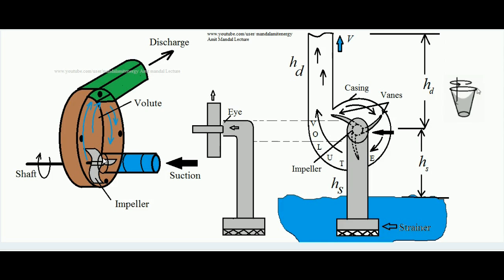Now how does water enter inside the casing? It is by the help of a suction pipe. This is the point of suction — you can see this is the pipe, this is the portion of suction pipe. Water travels through this suction pipe and ultimately reaches the impeller. This end of the suction pipe where water meets the rotating impeller is called the eye — "I". So the eye is the place from where water enters the casing of the centrifugal pump. This green colored entity is the portion of the delivery pipe, through which water ultimately travels and reaches the destination.